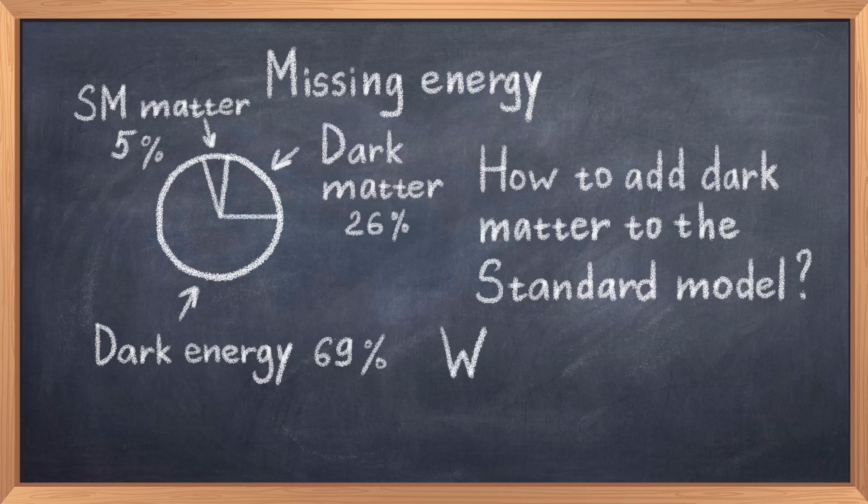The rest of the energy of the universe is dark energy. This is even more mysterious than dark matter. The best attempts to explain this from the standard model led to a prediction that was 120 orders of magnitude different from the observed value. This is also known as the worst prediction in all of physics. Needless to say, dark energy appears to be way beyond the standard model.